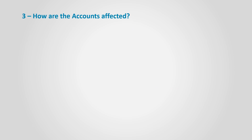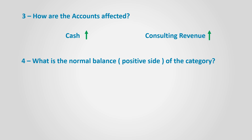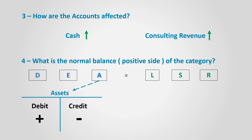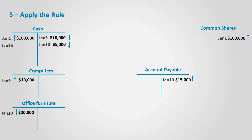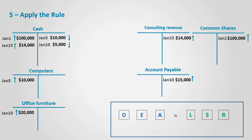How are the accounts affected? Cash increased since the business received cash, and consulting revenues increased since the business provided the services. What is the normal balance? The asset category has a normal debit balance and the revenues category has a normal credit balance. Let's apply the rule: cash falls in the assets category whose normal balance is debit and it increases, so $14,000 is recorded in the debit side. Consulting revenues falls in the revenue category whose normal balance is credit and it increased, so $14,000 is recorded in the credit side. Notice the overall effect: assets increased by $14,000 in the form of cash, revenues increased by $14,000 as well, so both sides balance.